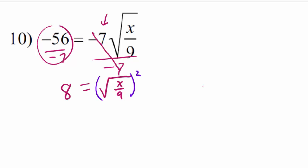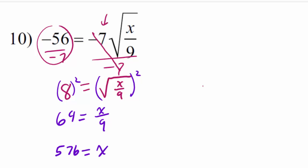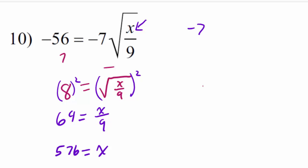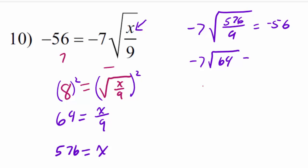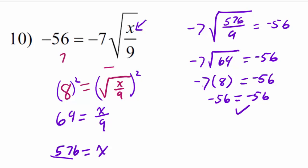To get rid of the radical, we square both sides and get 64 equals x over 9. Multiplying both sides by 9 gives x equals 576. To verify, substituting 576 back in: negative 7 times the radical of 576 over 9 should equal negative 56. Inside the radical, 576 divided by 9 is 64. So negative 7 times the square root of 64 is negative 7 times 8, which is negative 56 equals negative 56. That checks out — 576 is the solution.